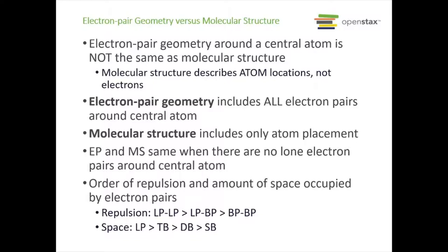When it comes to repulsion of electron pairs: lone pair–lone pair interaction is the strongest, then lone pair–bonding pair, and bonding pair–bonding pair repulsion is the weakest. When it comes to space, lone pairs take up the most, followed by triple bonds, then double bonds, and then single bonds. Lone pairs really want all the space around them; a triple bond shares six electrons, taking up a lot of space, and we do less and less as we go down.